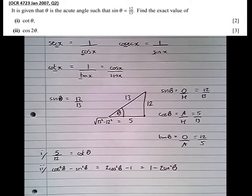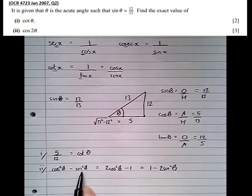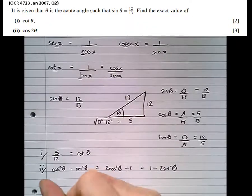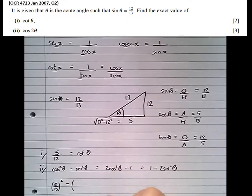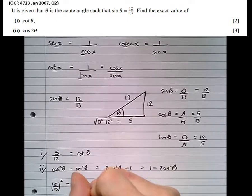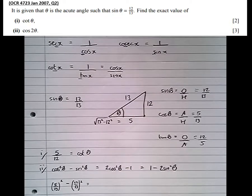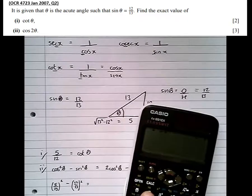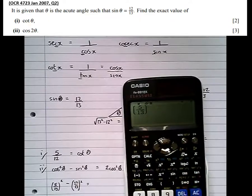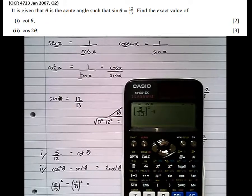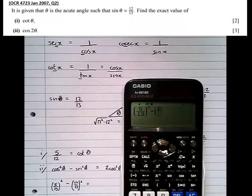In this case, they're all as useful as each other because we have both sine theta and cos theta. So cos²θ - sin²θ is (5/13)² minus (12/13)², which is equal to 5/13 squared take 12/13 squared.